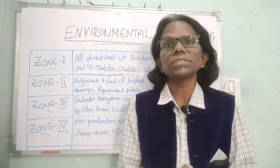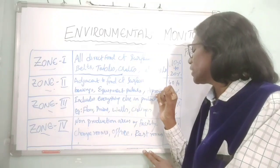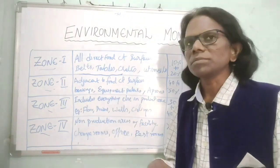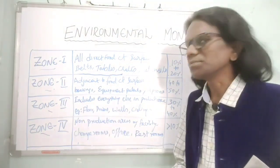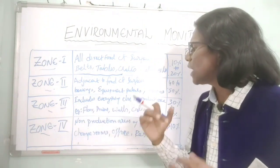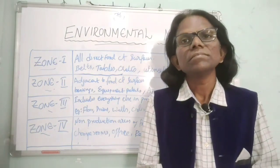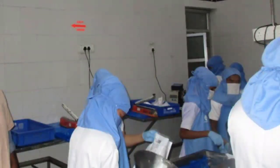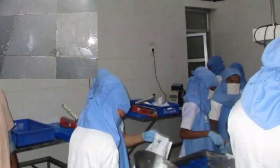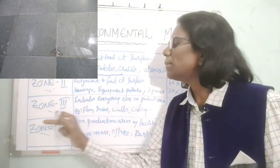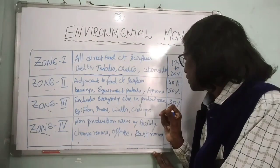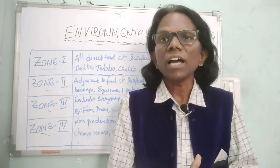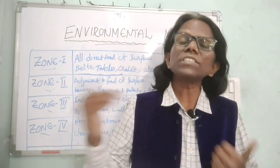In Zone 2, sampling should be 40 to 50 percent, and pathogenic testing should also be done in this area. Zone 3 includes everything else in the production areas — floors, walls, ceilings, drainages, etc. Sampling must also be done in Zone 3, at 30 to 40 percent. Product testing should be done if Zone 3 is contaminated with potential pathogenic bacteria.